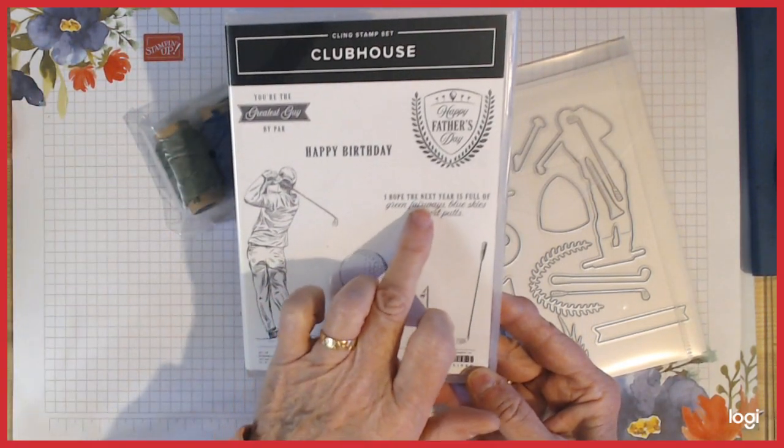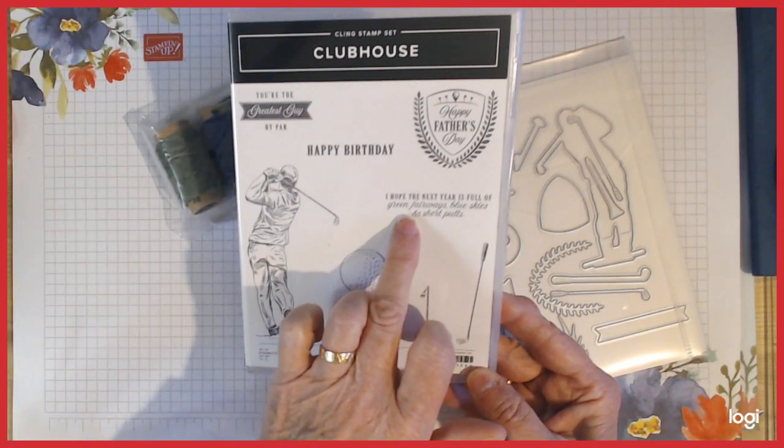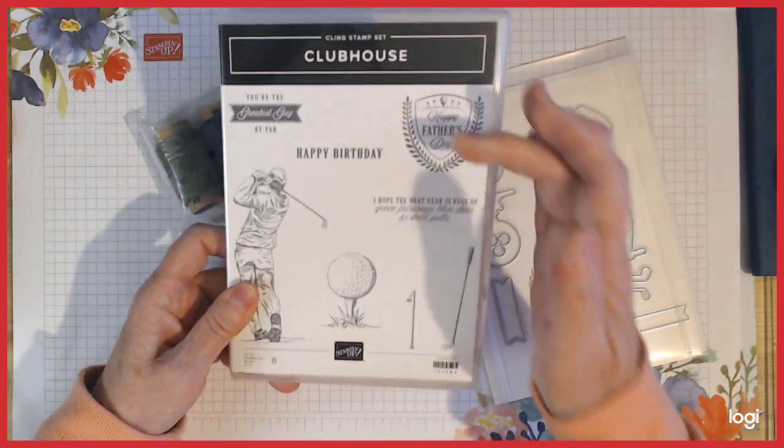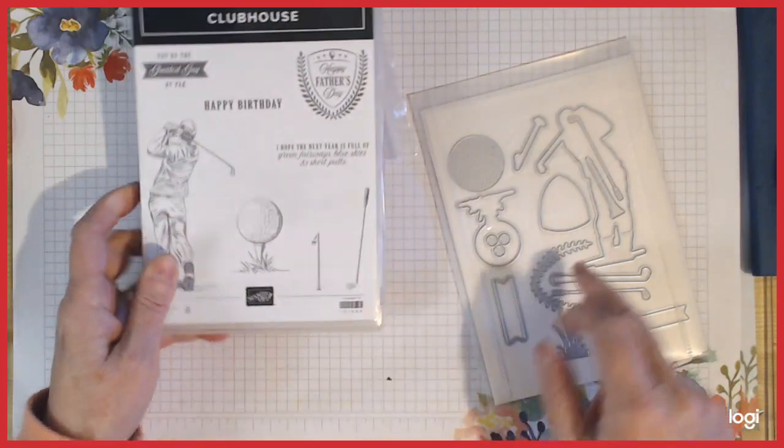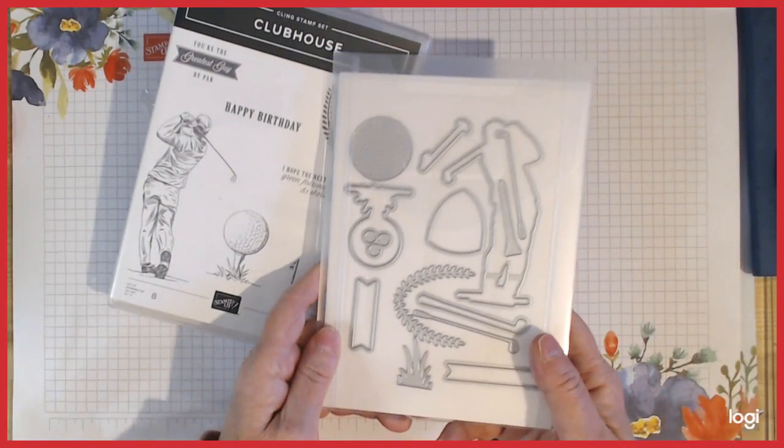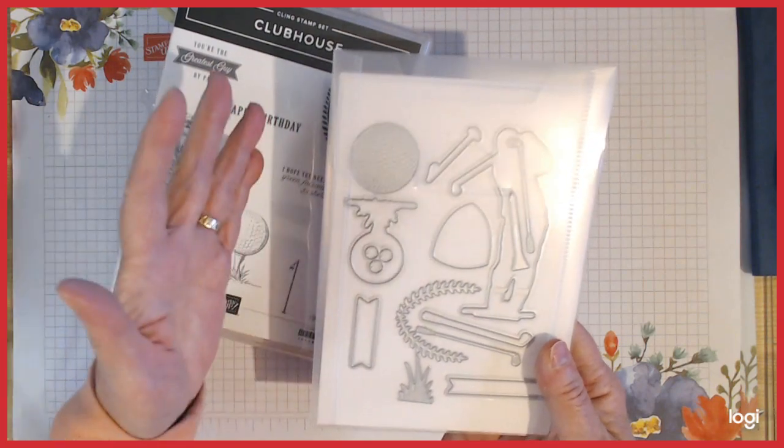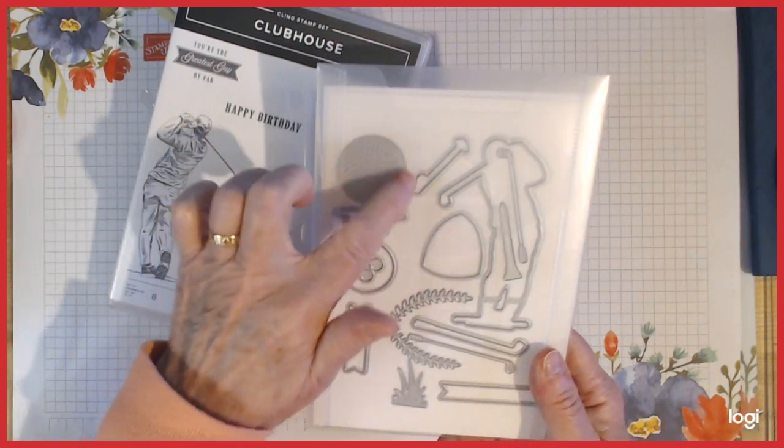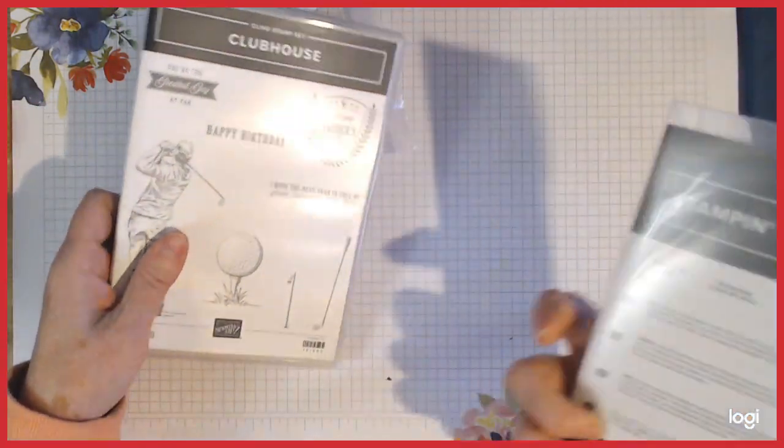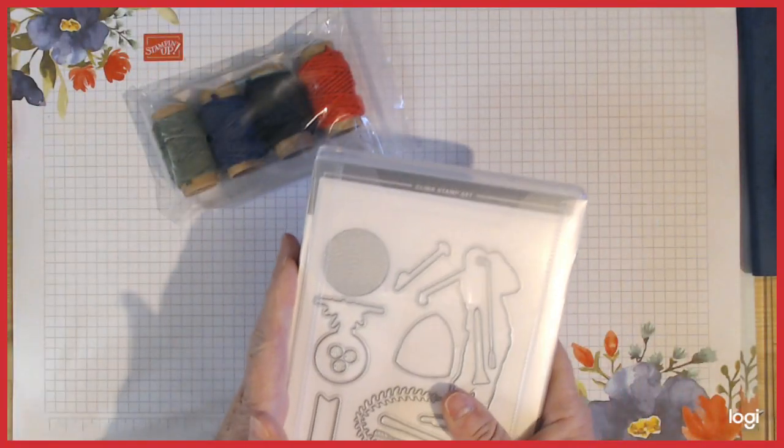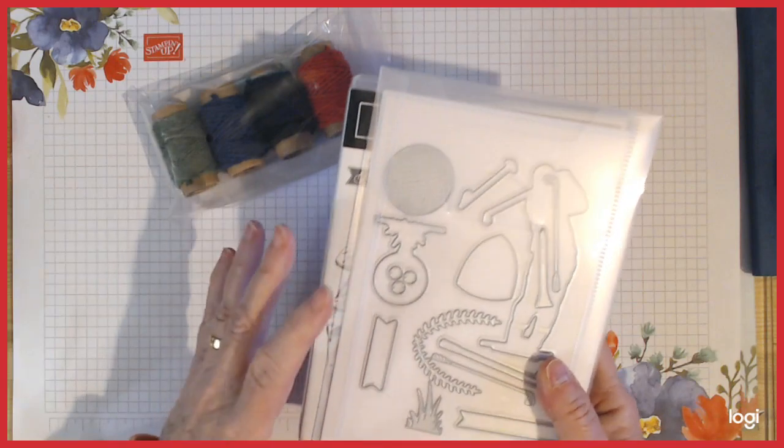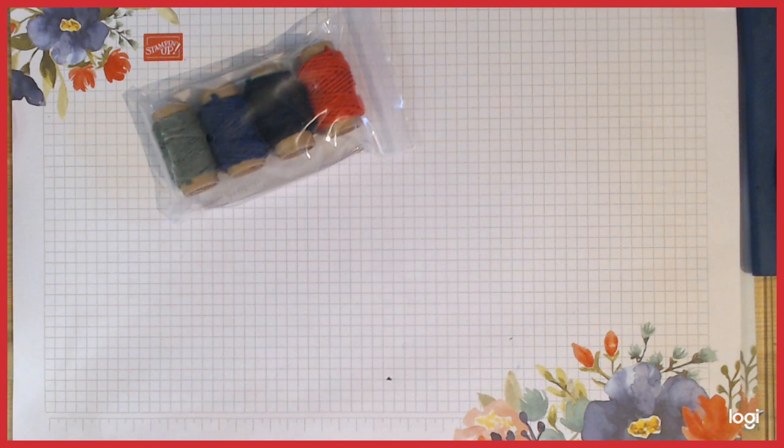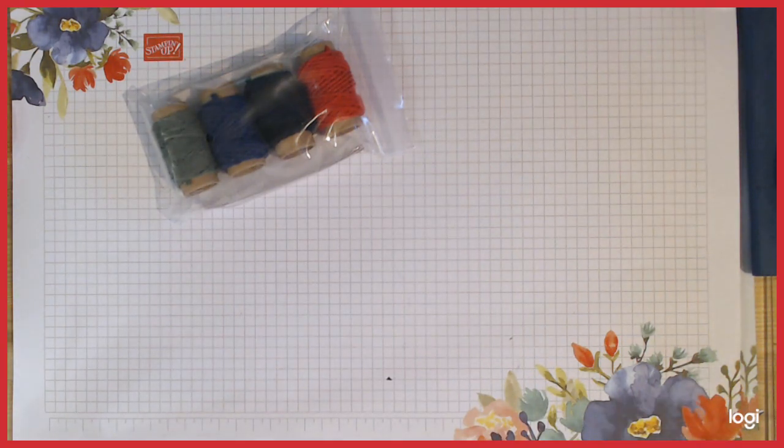I bought the bundle of the Clubhouse Stamps - great stamps. You're the greatest, guy by par - I mean that's great. I hope the next year is full of green fairways, blue skies, and short putts. Perfect! And a happy Father's Day, and all these which you can cut out of course with the dies. The thing that attracted me to this, I know I'm really weird, is the golf ball die - perfect, and it embosses too. So I'm really happy with that set.